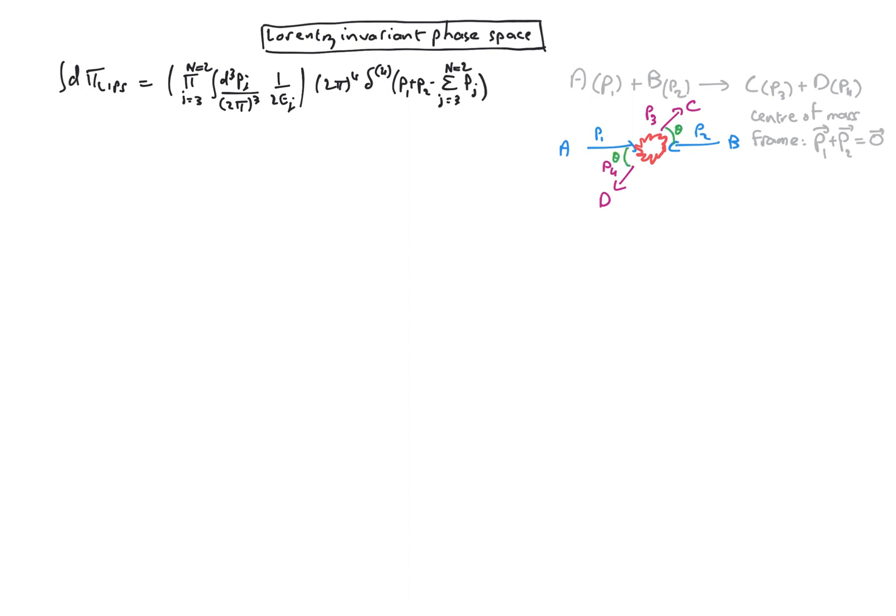We will also consider that the collision is symmetric about the collision axis and therefore doesn't depend on the azimuthal angle but only on the angle theta. So we will then be looking for a differential cross section dσ/dθ, or equivalently dσ/d cos θ.